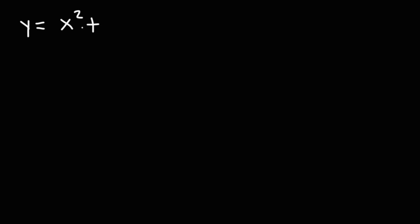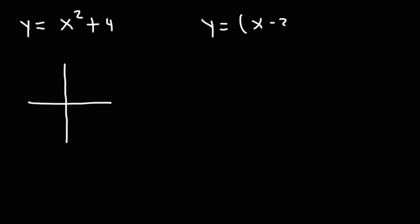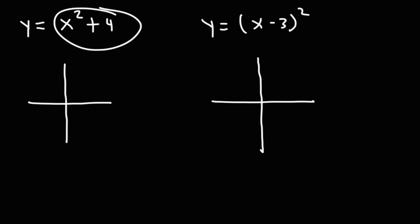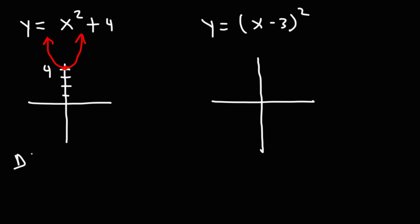Now let's try another example. Let's say we have y is equal to x squared plus 4. We're dealing with a transformation — this is basically x squared but shifted 4 units up. So the graph is going to start at positive 4 and open upward. The domain is going to be the same thing, negative infinity to infinity. The range is different — the lowest y value is 4, and the highest goes all the way up to infinity, so it's going to be 4 to infinity.